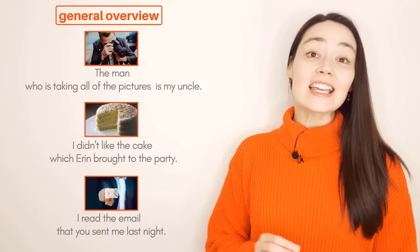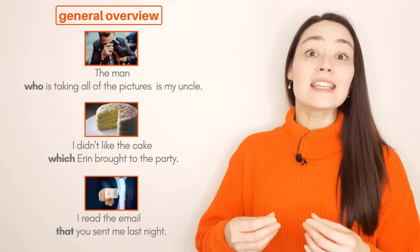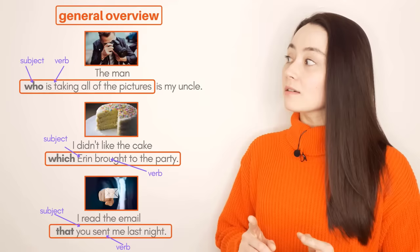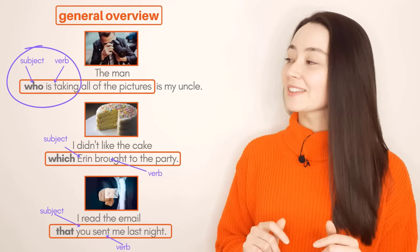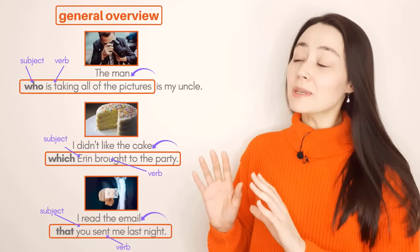Let's start with an overview. I have three sentences, and each sentence has a relative pronoun: who, which, that. What about whose and whom? Don't worry, we'll get to that later. The relative pronoun is the head of the relative clause. Each relative clause has a subject and a verb. The relative clause always goes after the noun it is describing — man, cake, email. Keep these basic points in mind because you'll see this repeated again and again in today's lesson.